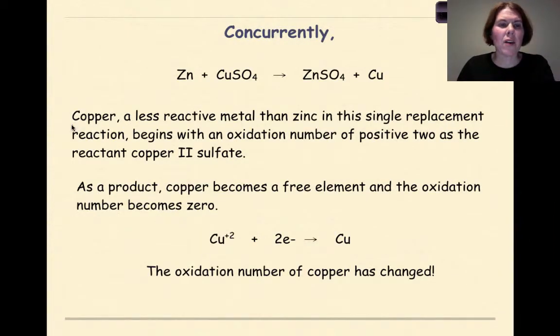At the same time, we have copper. Copper is a less reactive metal than zinc in this single replacement reaction, and the copper is going to begin with an oxidation number of positive two because I know that the sulfate ion is minus two. I also see the name copper two sulfate and the roman numeral says it's plus two. As a product, copper becomes a free element and the oxidation number becomes zero.